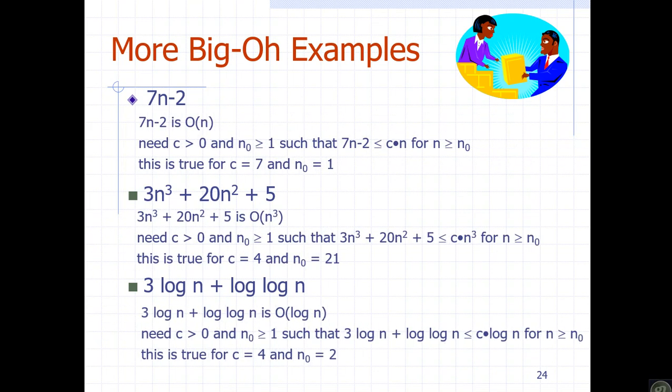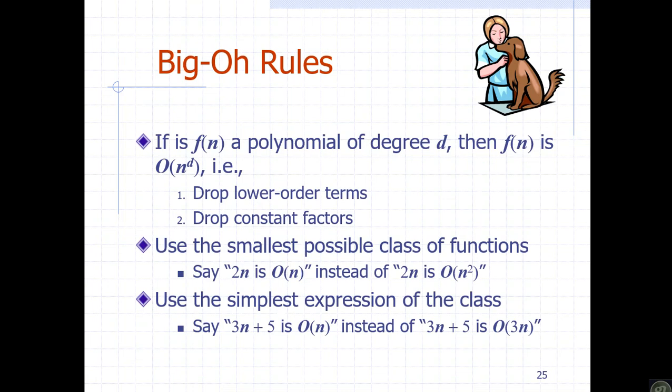Big O has a rule to simplify functions. The rule is to drop low-order terms. The term which does not affect the function's growth rate can be dropped, and we also drop constant factors.